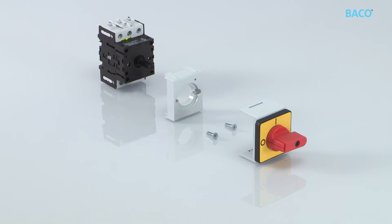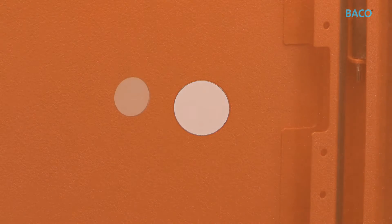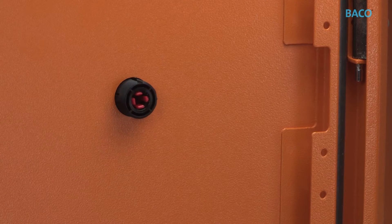The flush mounting assembly, diameter 22mm, enables quick and easy assembly in a 22.3mm panel cutout.